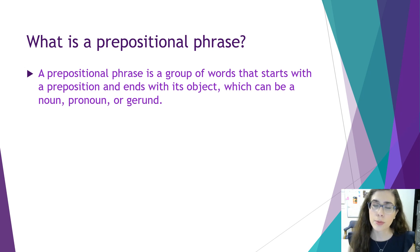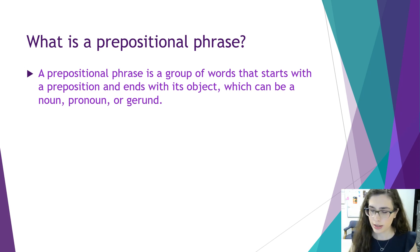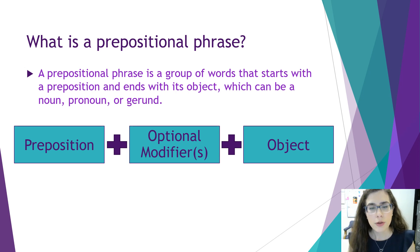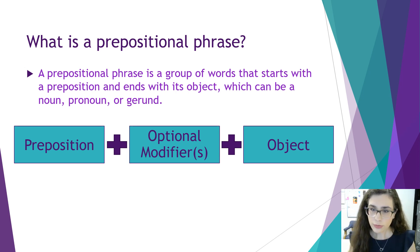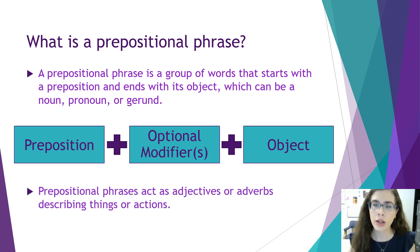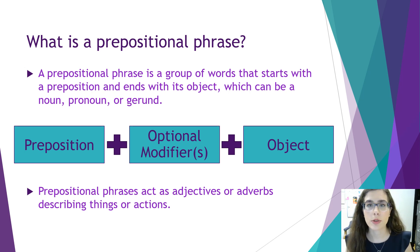The formula looks like this: you have the preposition itself, any potential modifiers that you want, and then the object of the prepositional phrase. In a sentence, you'll use prepositional phrases to act as adjectives or adverbs describing things or actions.